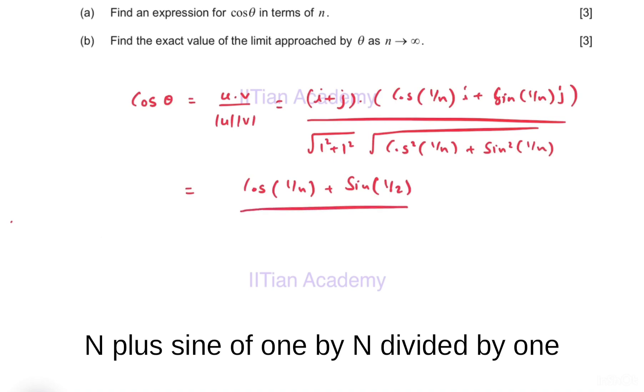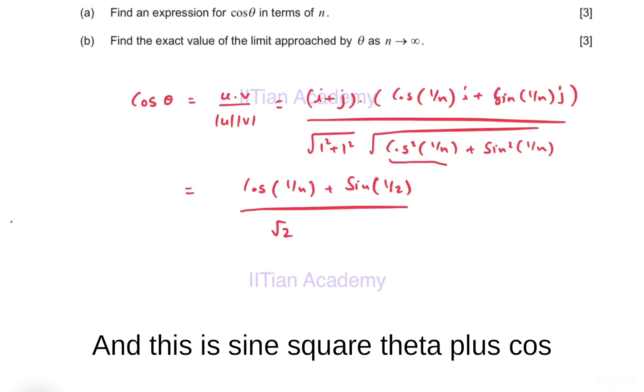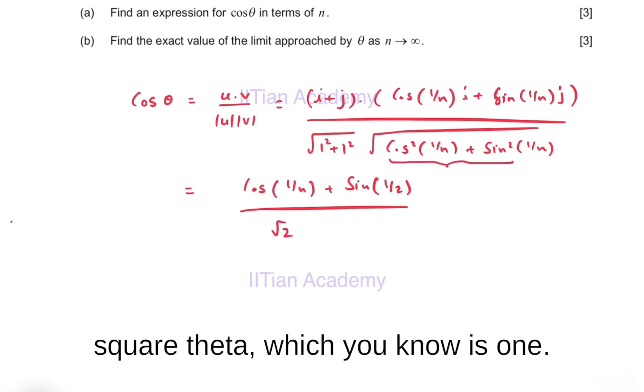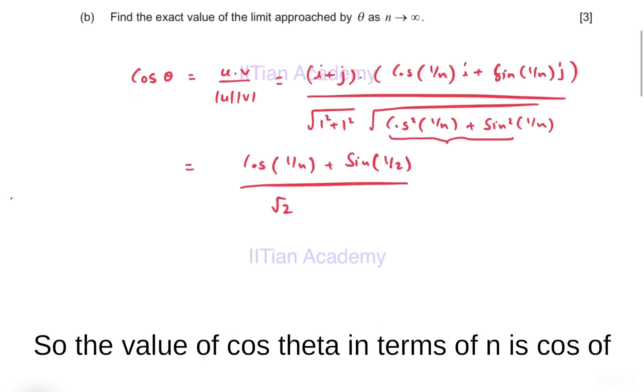Divided by √2, and this is sin²θ + cos²θ, which you know is 1. So the value of cos θ in terms of n is (cos(1/n) + sin(1/n)) divided by √2.